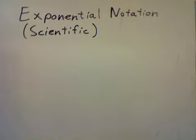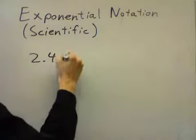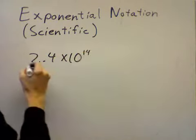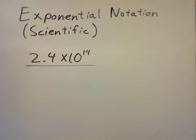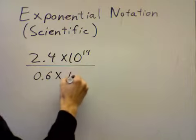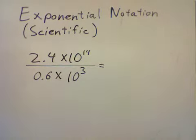Now, let me throw in some more complicated numbers and see how it goes. Suppose I had the number 2.4 times 10 to the 14, and I divided it by 0.6 times 10 to the 3. How would I do that?